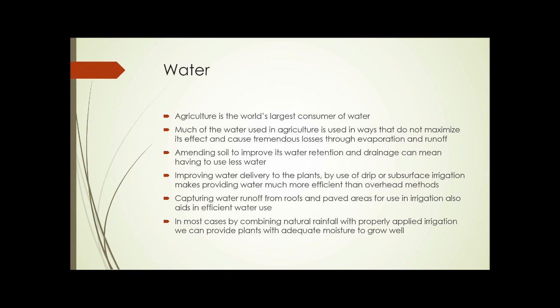Agriculture is the world's largest consumer of water. In the United States, as much as 70% or more of our water usage goes to agriculture — some estimates put it as high as 85%. Much of the water used in agriculture is used in ways that do not maximize its effect, causing tremendous losses through evaporation and runoff. Amending soil to improve its water retention and drainage can mean having to use less water.